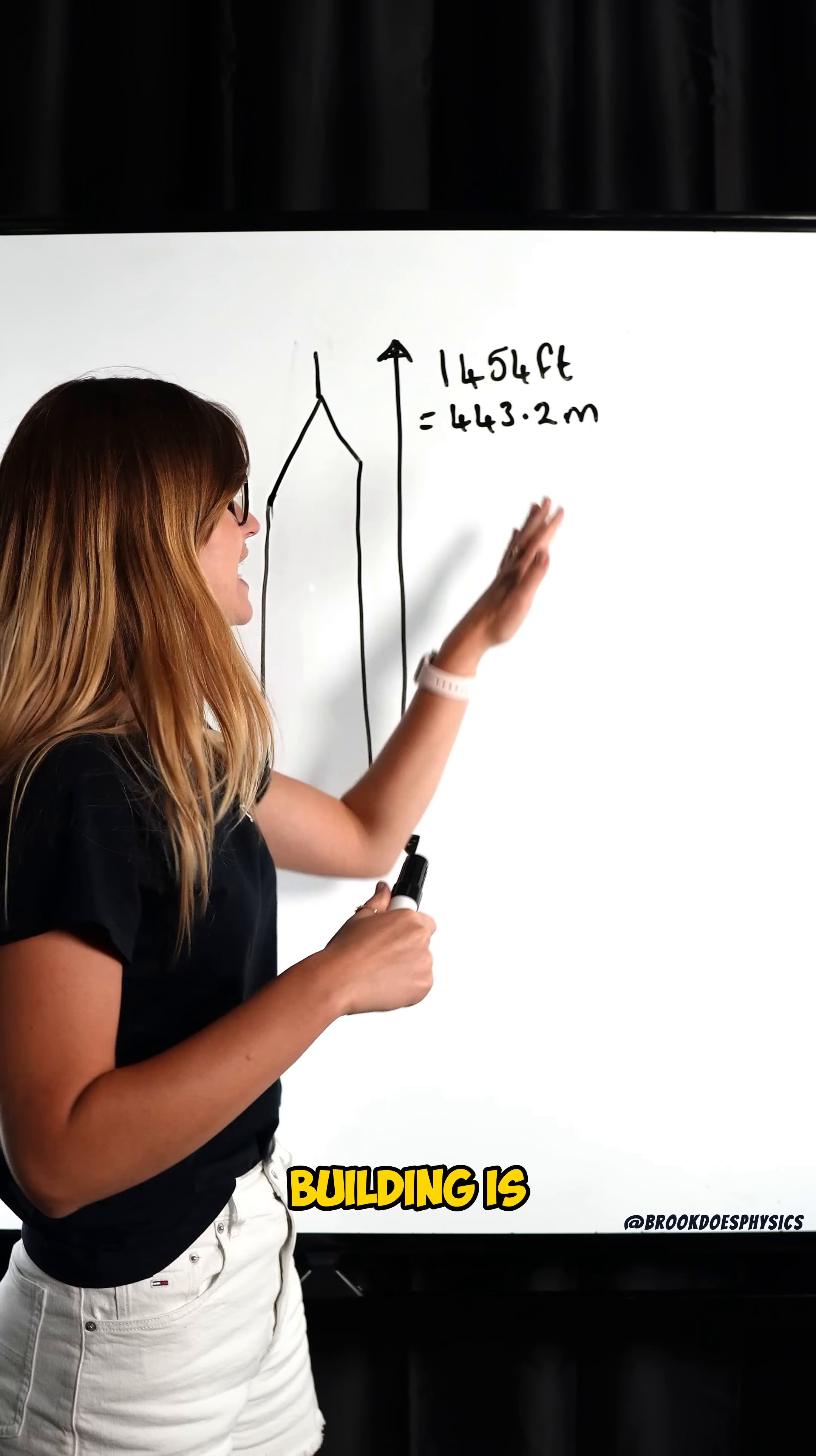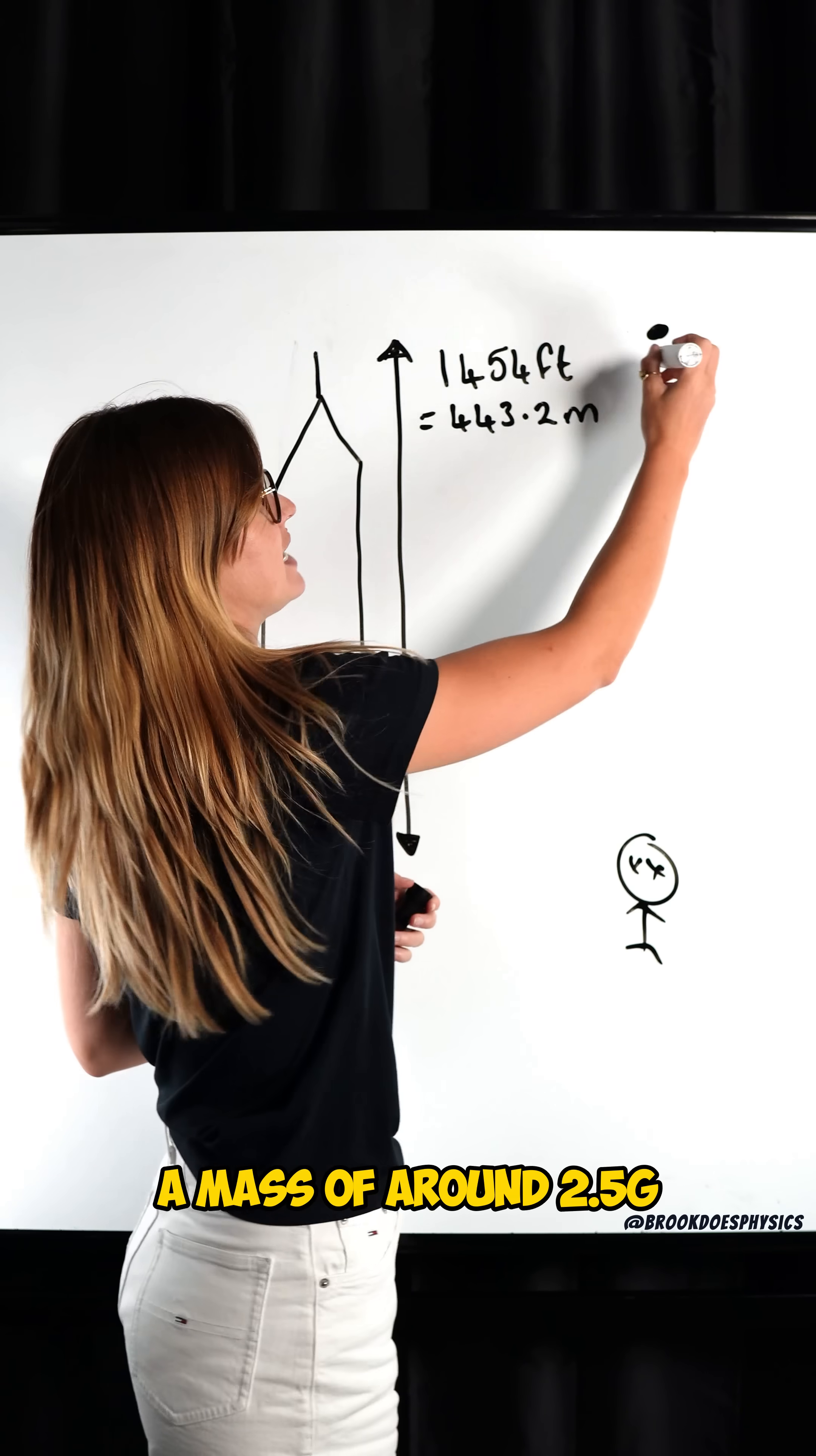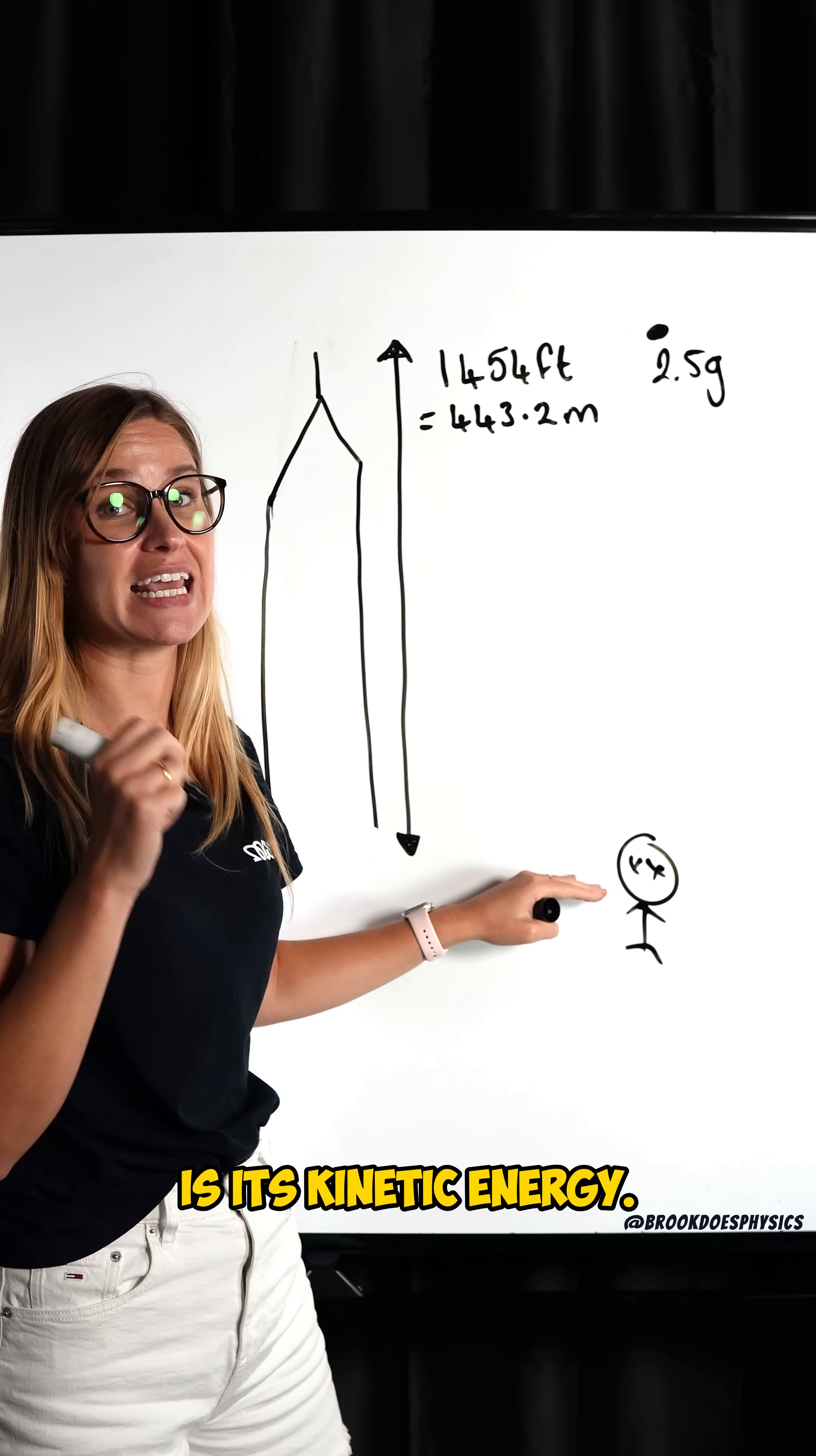The height of the Empire State Building is 443.2 meters. Pennies have a mass of around 2.5 grams. So we can use that to calculate what is the speed right at the bottom and what is its kinetic energy.